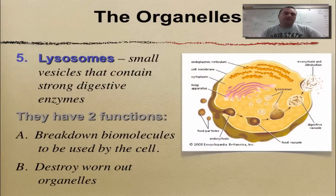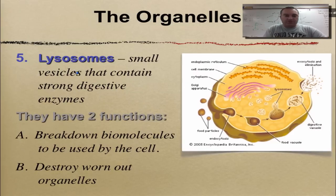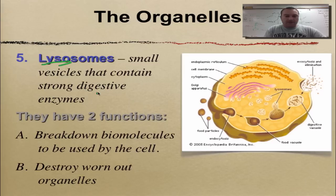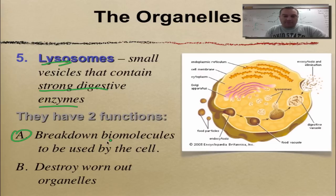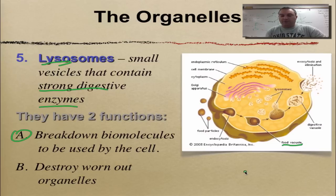Lysosomes are made by the Golgi and they contain digestive enzymes. Remember that 'lys' means to break — these have strong digestive enzymes that break down things. They have two functions: they break down biomolecules like food, and they destroy worn-out organelles. We have food particles being brought into the cell, packaged in what is called a food vacuole — a big membrane bubble with a piece of food in it.